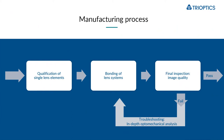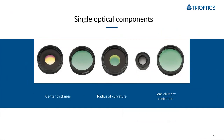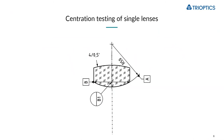Let's start at the single element level. There are many parameters that can be controlled at the single component level, such as center thickness, radius of curvature, and lens element centration. Here I would like to focus on lens element centration — to have a common understanding about what we mean by the centration of a single lens.